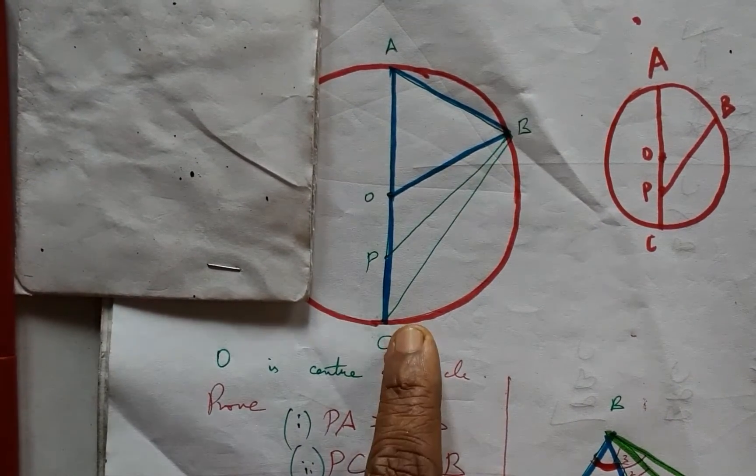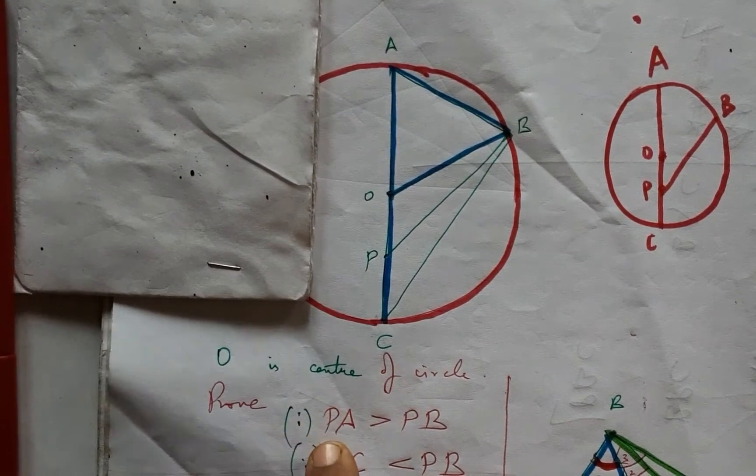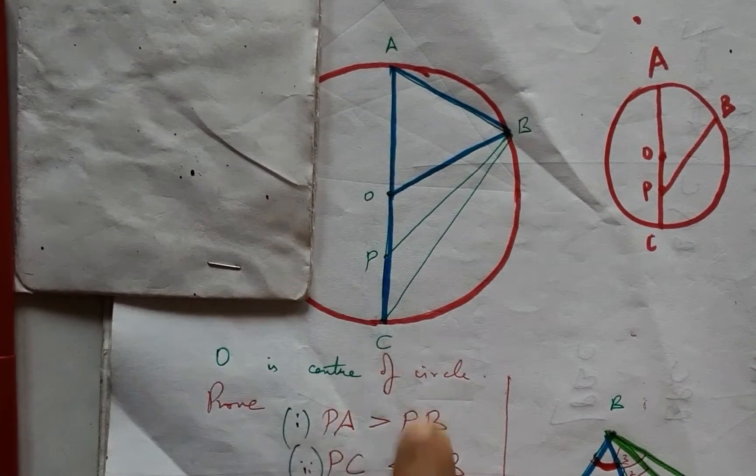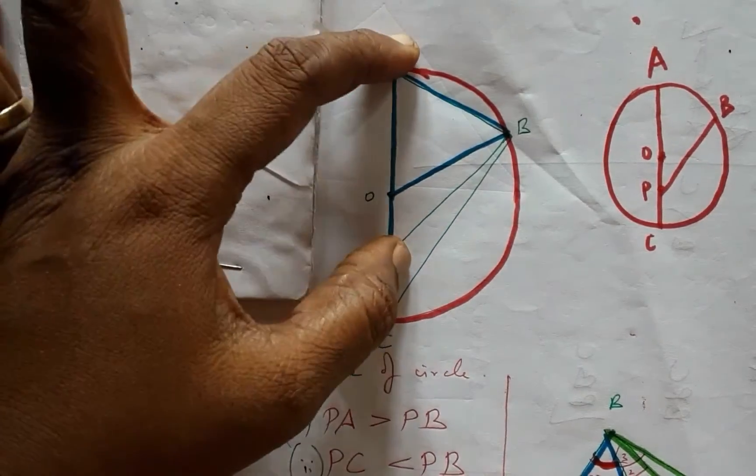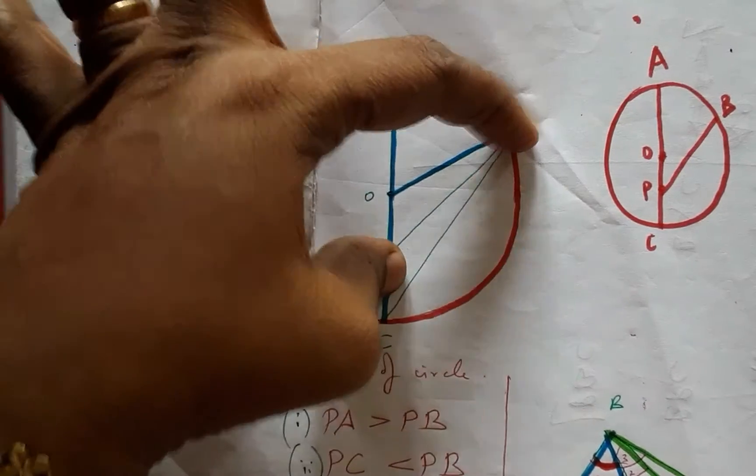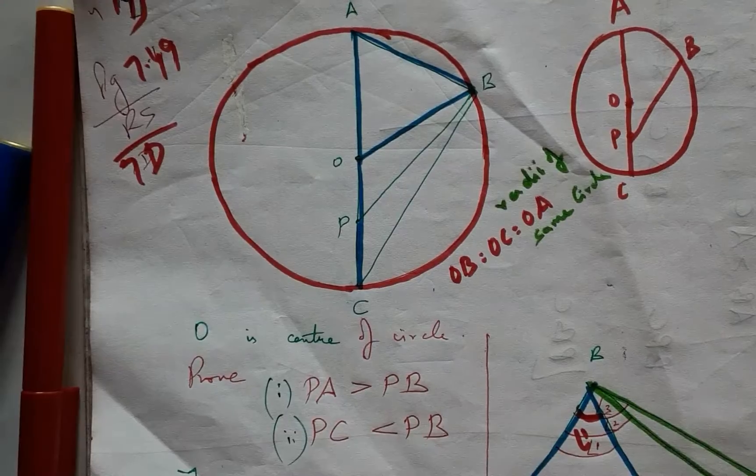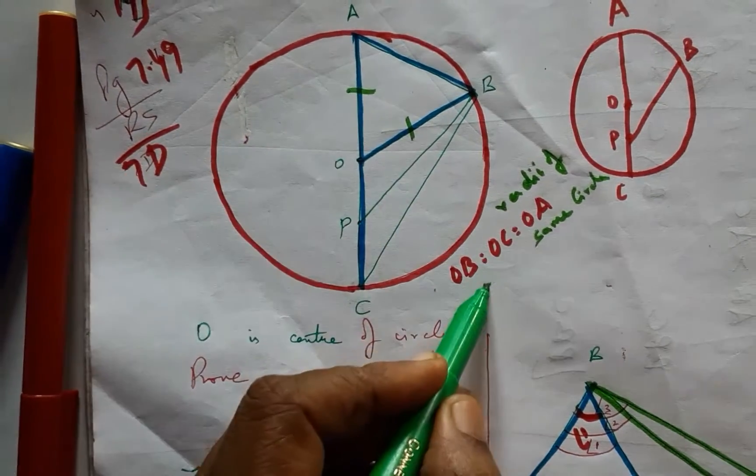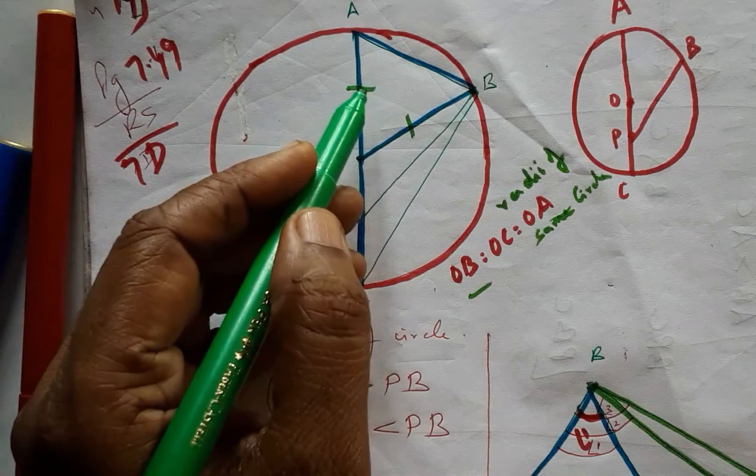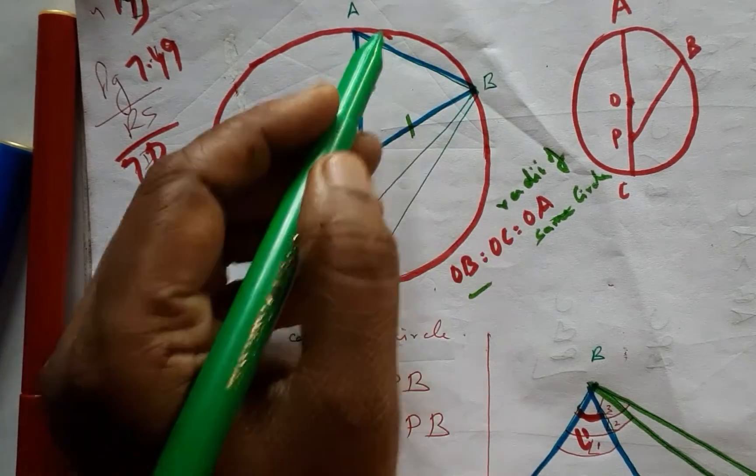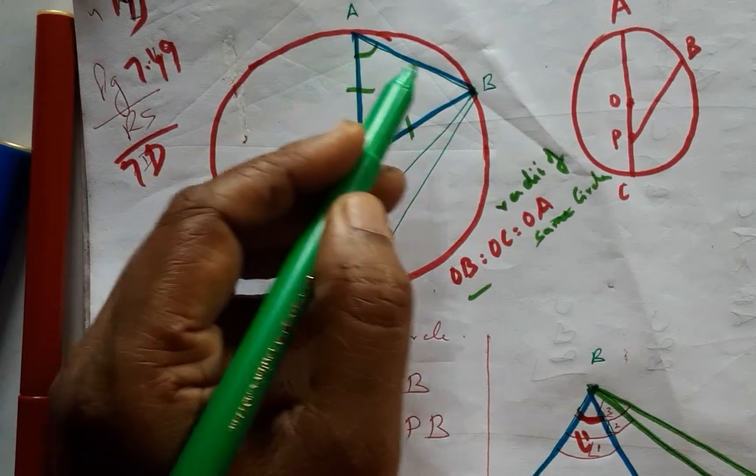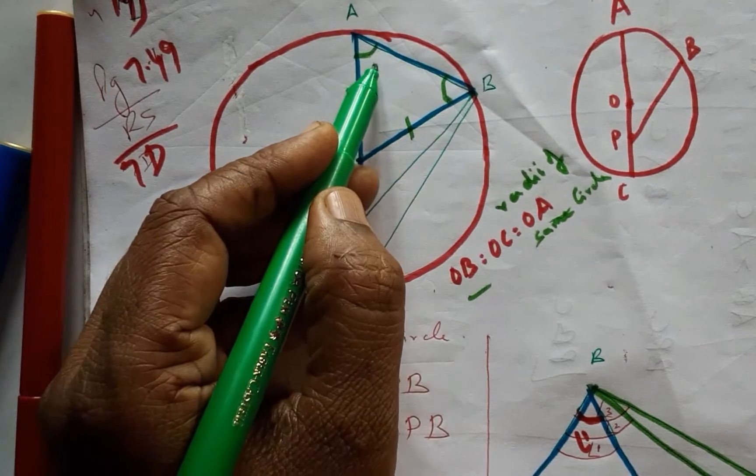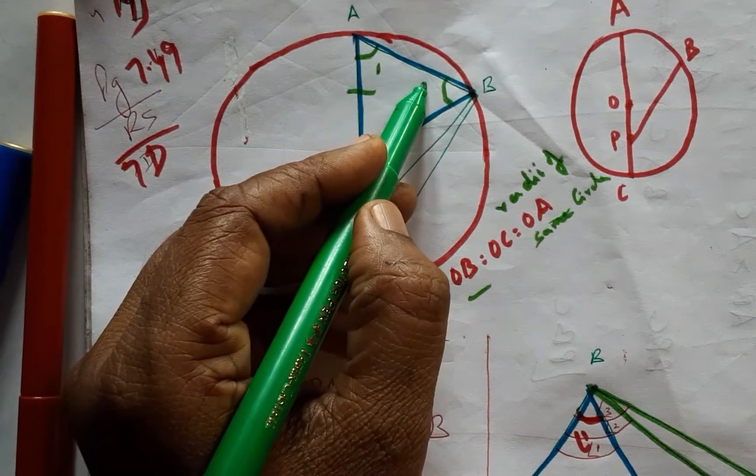Now we are supposed to prove PA is greater than PB. That is the requirement. OB and OA being radii of the same circle, we have these two sides of this triangle as equal, and therefore these base angles will be equal. This will be angle 1 and this will be angle 1. These two will be equal.